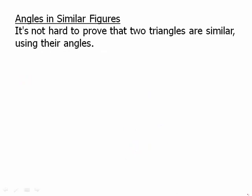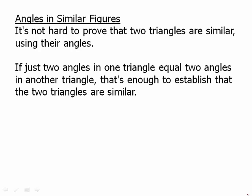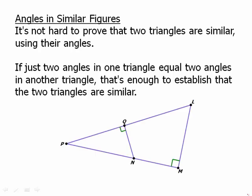It's not hard to prove that two triangles are similar using their angles. If just two angles in one triangle are equal to two angles in another triangle, that's enough to establish that the two triangles are similar. For example, the smaller triangle has a right angle and the larger triangle also has a right angle — that's one thing in common. And they share the angle at P. That's two angles, which is enough to guarantee those two triangles are similar.